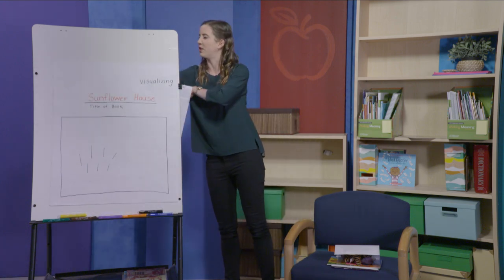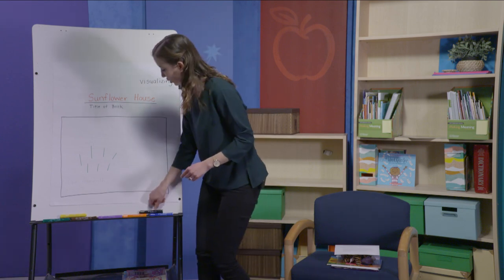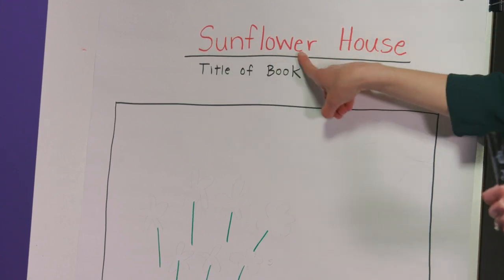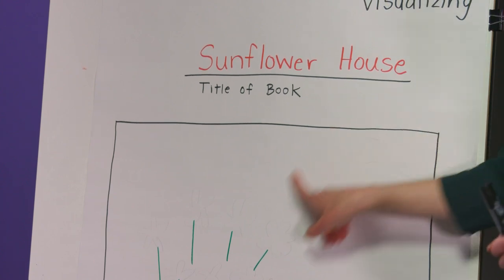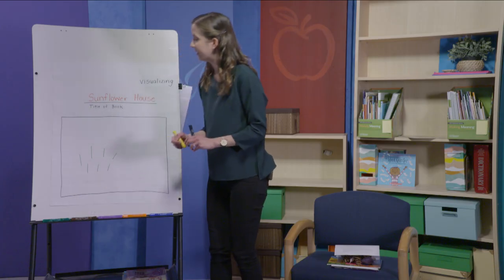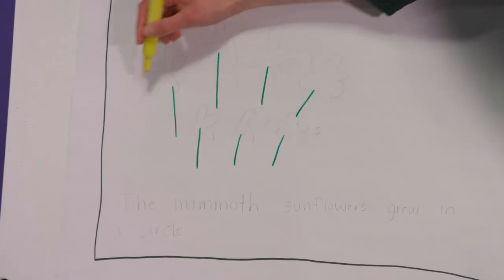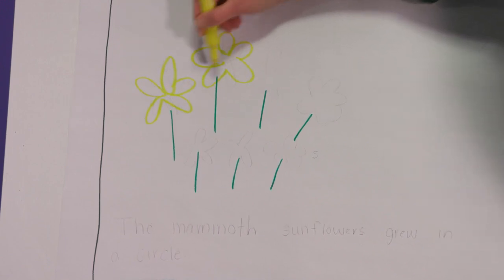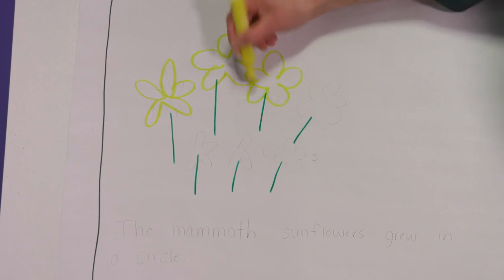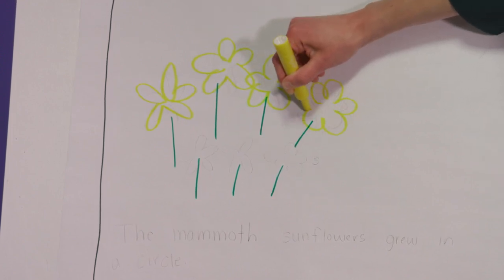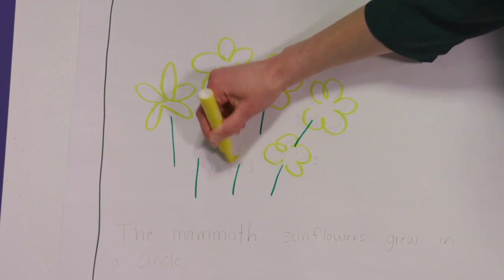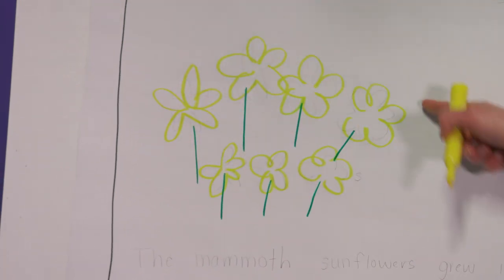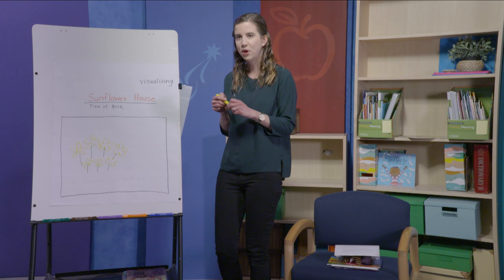So when I was visualizing during the story Sunflower House — I'll write the title up here because that was the title of our book: Sunflower House. I was visualizing lots of sunflowers and I drew some of those stems already. I was visualizing bright yellow sunflowers in a circle, and the words that helped me were sunflowers, circle, and even the word mammoth because these were giant. So you should still be drawing while I'm drawing too, and this can help you if you are feeling a little stuck.